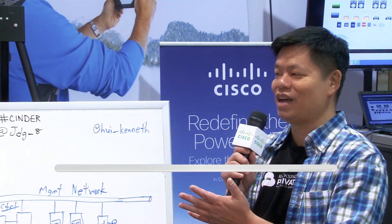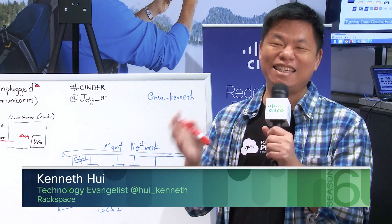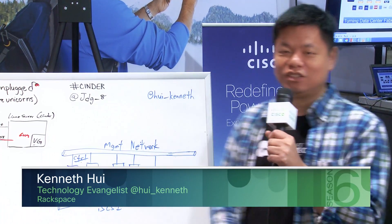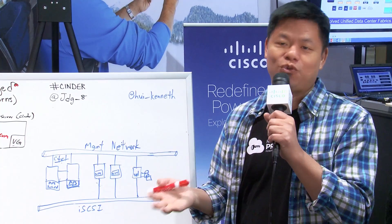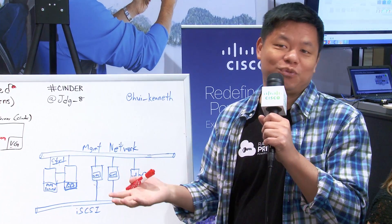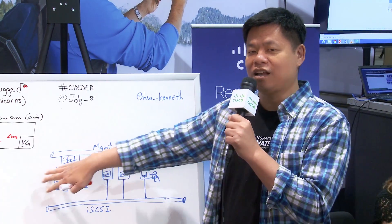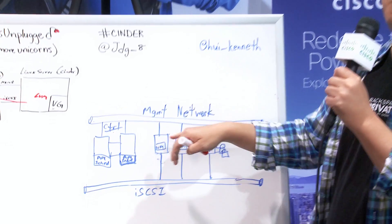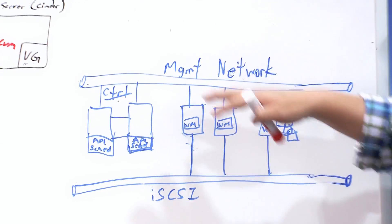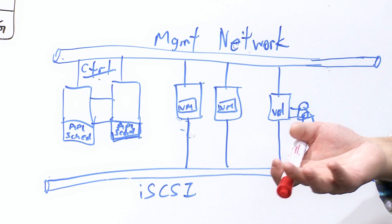Thanks John, you talk almost as fast as a New Yorker — that's amazing. One of the great things about Cinder is how easy it actually is to get started. Let's say you happen to have an OpenStack platform running in your basement. You have two controller nodes that control the OpenStack infrastructure and two compute nodes — what we call hypervisor nodes — that actually house your VMs, and you decide you'd like to attach some block storage to your VMs.